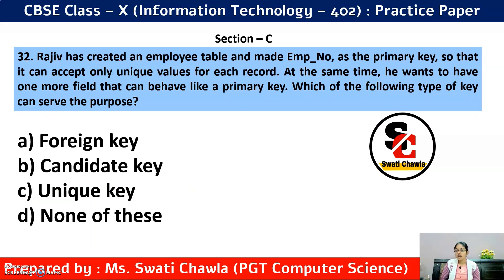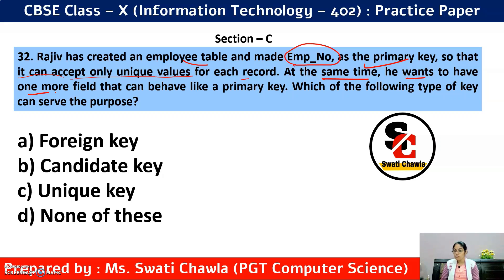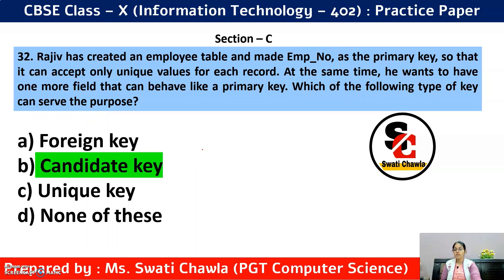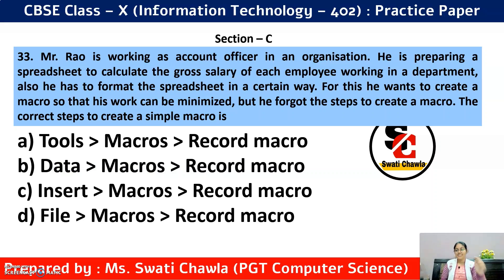Question 32: Rajeev created an employee table with EMP number as the primary key, so it accepts only unique values. He also wants one more field that can behave like a primary key. Which type of key can serve this purpose? The columns that are able to become a primary key are known as Candidate Key. So the correct answer is option B — Candidate Key.